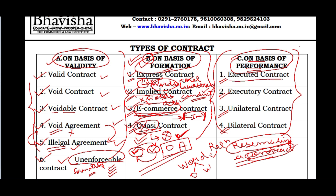Executed contracts - the answer is hidden in the name itself. 'Executed' means already executed/completed. X and Y had a contract where X would give his house to Y and Y would give 50 lakh rupees in return. When X transferred his house to Y and Y paid X the 50 lakh rupees, neither party has anything left to do. Both parties have performed their respective obligations - that is an example of an executed contract.